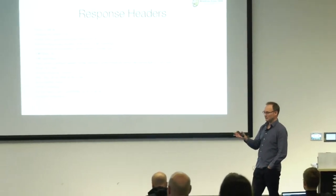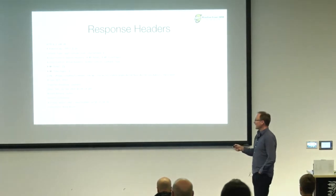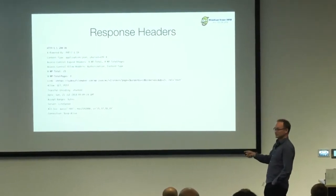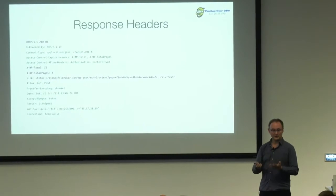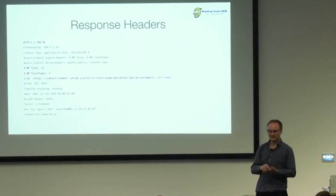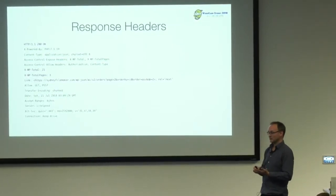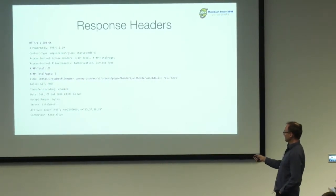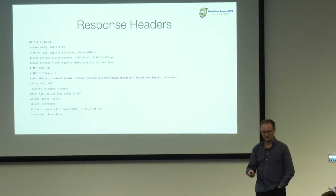Here's what the response headers look like. At the top is the response code — with any API you want to check the response code to see if it was successful. The 200 series are successful requests. In the middle there's the X-WP-Total and X-WP-TotalPages. My request found 21 records, and with the default of 10 items per page I'll need to make three requests: page one is records 1-10, page two is 11-20, and page three is record 21. And because there's another page, it gives me the link to that second page, which becomes the URL for my next request.